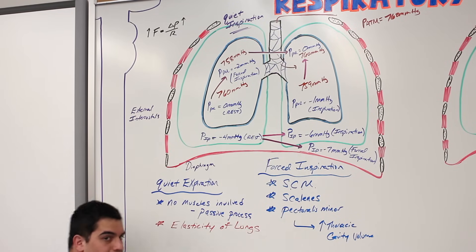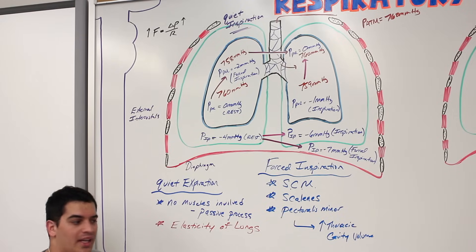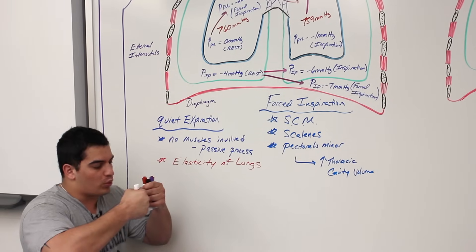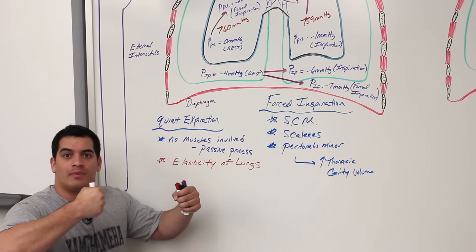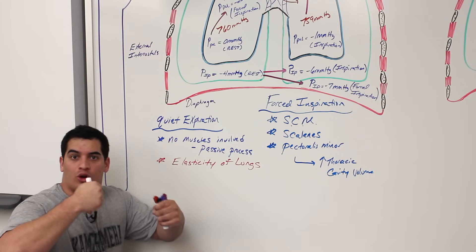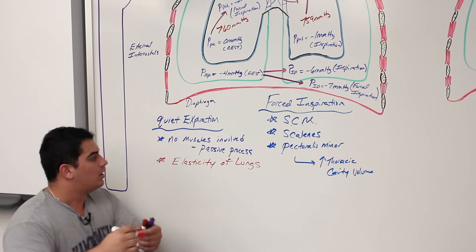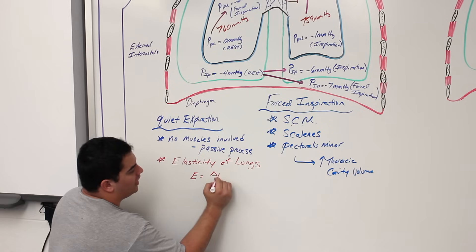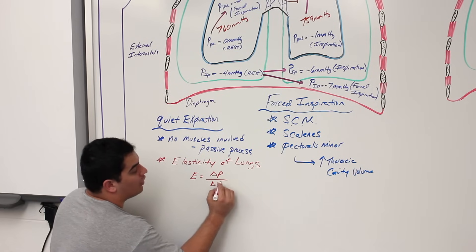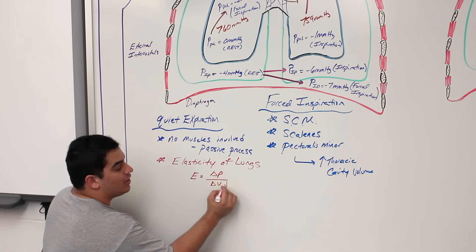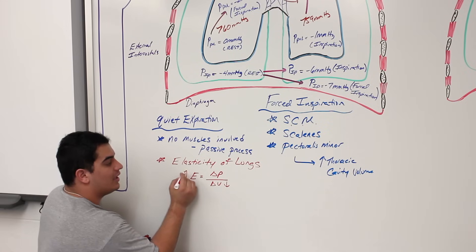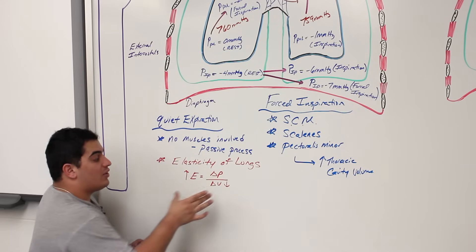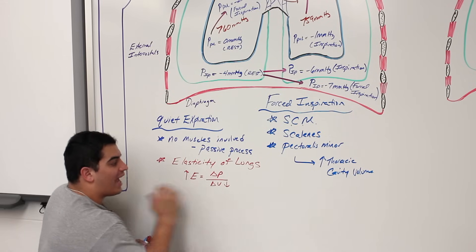Quiet expiration completely depends upon the elasticity of the lungs. Elasticity is the desire of a structure — in this case the lungs — to resist being stretched. It always wants to snap back and recoil to the smallest size possible. Elasticity equals the change in pressure over the change in volume, so when volume decreases, elasticity increases.